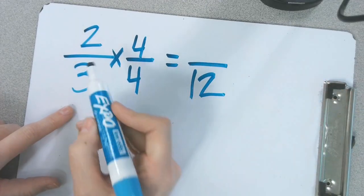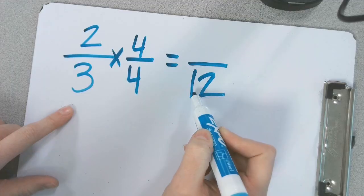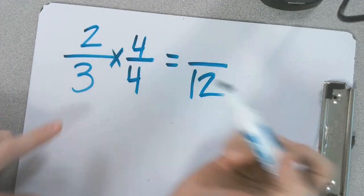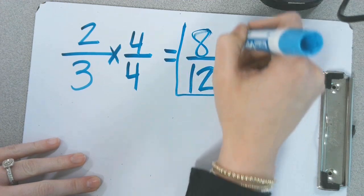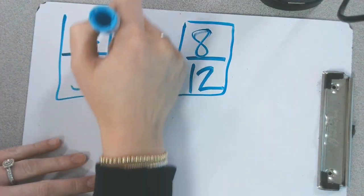So 3 times 4 is 12. What is 2 times 4? 8. So we can say that 8 twelfths is equivalent to 2 thirds.